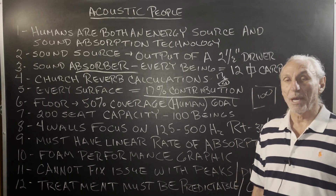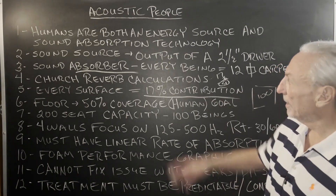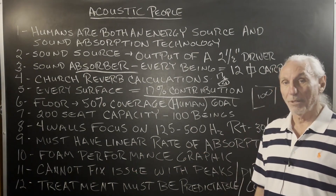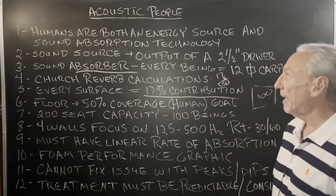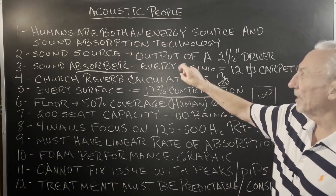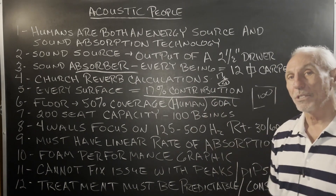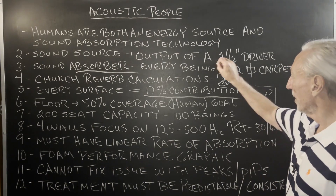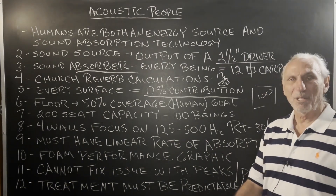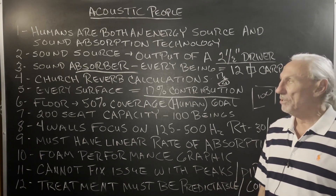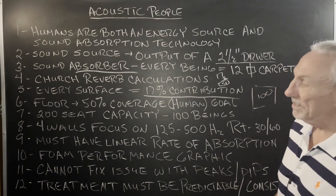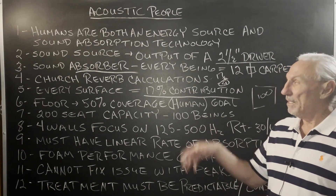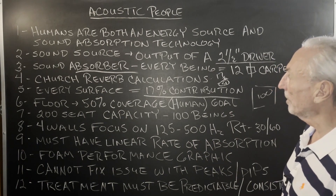People really have two variables that we have to consider in acoustics. They're both a sound source of energy — you're hearing energy transmitted from my mouth — but they're also a sound absorption technology. In acoustics we have to put numbers to everything; we have to quantify and qualify. So about a two-and-a-half inch driver, computer speaker — that's the output we usually use for human beings — around 80 cycles to start, maybe 90 for men and upwards, so there's some frequency ranges to look at.